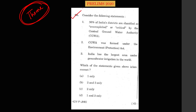So this is a question which came in the year 2020 — a question on groundwater. Consider the following statements: 36% of Indian districts are classified as overexploited and critical by the Central Groundwater Authority; the Central Groundwater Authority was formed under the Environment Protection Act; and India has the largest area under groundwater irrigation in the world. The answer to this question was statements two and three.